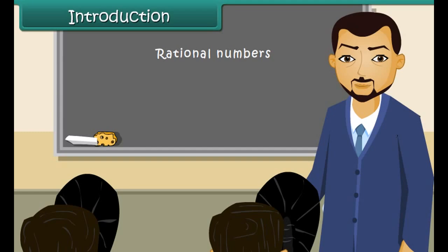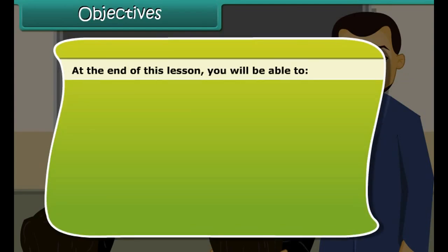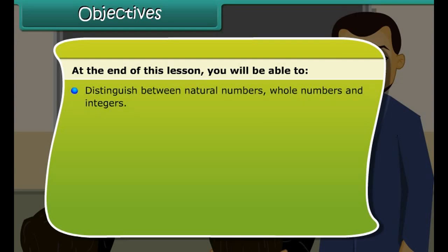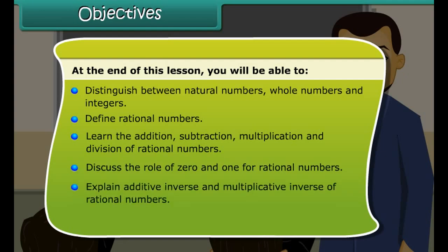Lesson objectives: at the end of this lesson you'll be able to distinguish between natural numbers, whole numbers, and integers; define rational numbers; learn the addition, subtraction, multiplication, and division of rational numbers; discuss the role of zero and one for rational numbers; explain additive inverse and multiplicative inverse of rational numbers; and find rational numbers between any two given rational numbers.